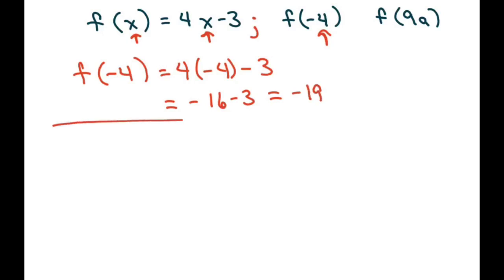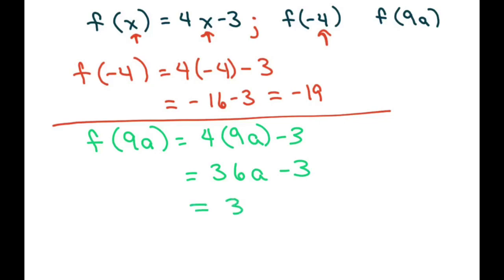And the second one is 9a, so I'm going to do the same thing. f of 9a equals 4. I leave a parentheses for the 9a and write that in there, and we get 36a minus 3. If you want, you can factor out the 3 and write this as 12a minus 1. Either way, these are both right.